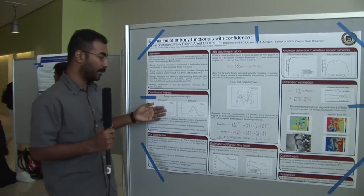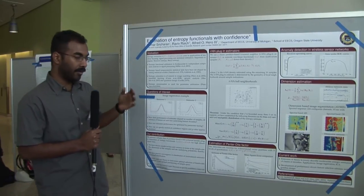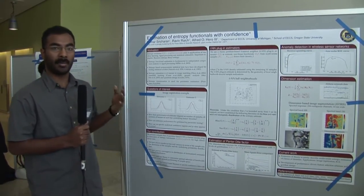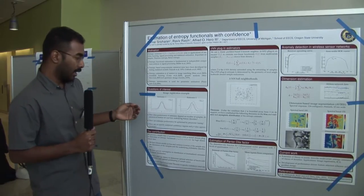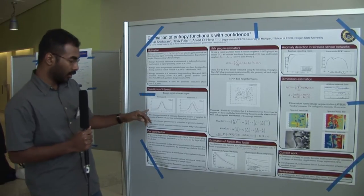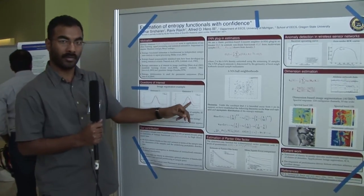Now why are these rates important? Consider this example where I have a class of densities parametrized by theta. Let's say I'm estimating the entropy for different values of theta. The blue curves here are the true entropy h(theta).